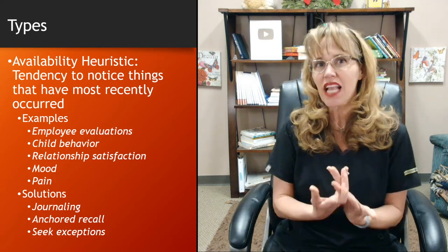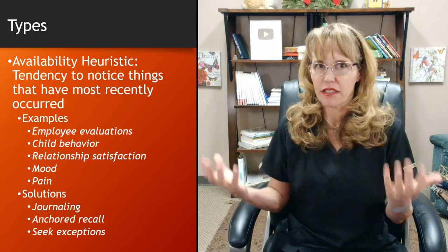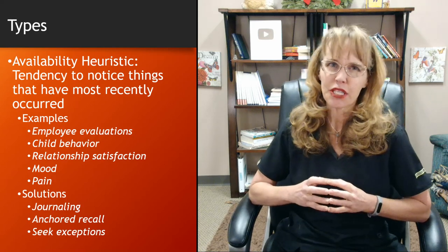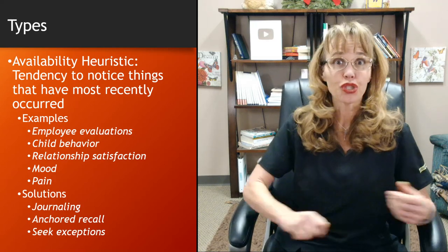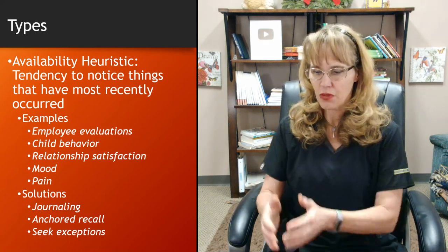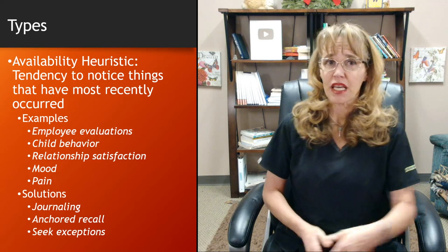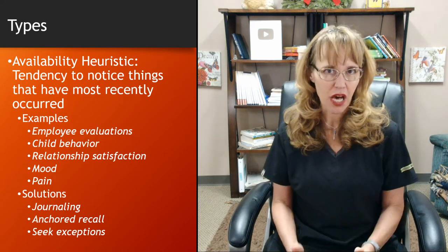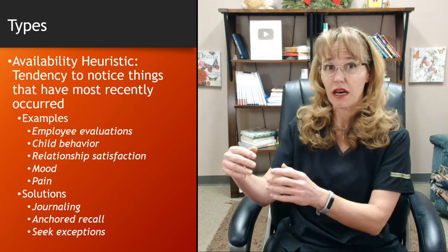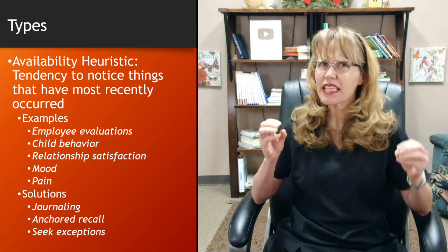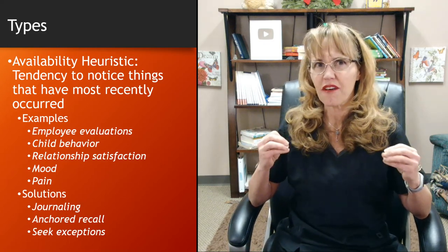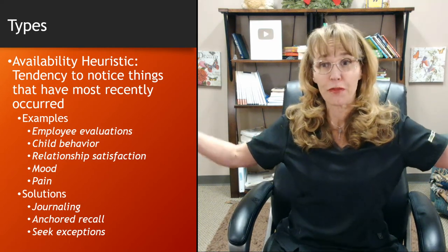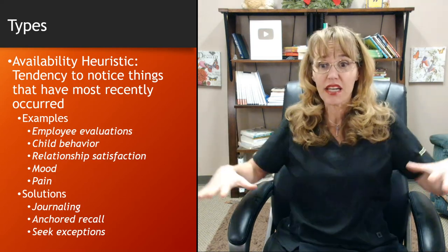The same thing applies to child behavior. If your child is having difficulties, journaling helps you see the exceptions — when is this not happening? Anchored recall is another technique you can use if you haven't journaled. Think back: how was this person performing last fall, last October, around the holidays, in the springtime? Use any time anchor to evaluate that person over a longer period of time or in multiple contexts.